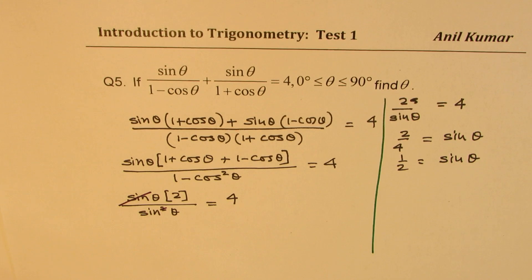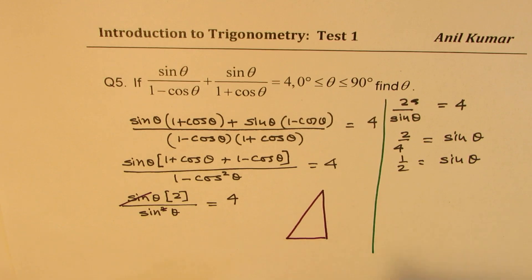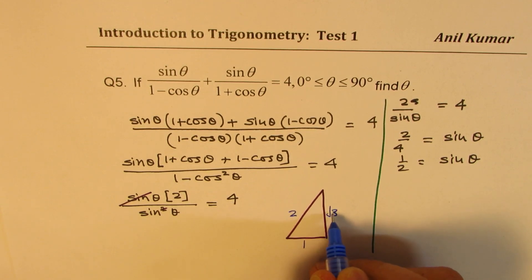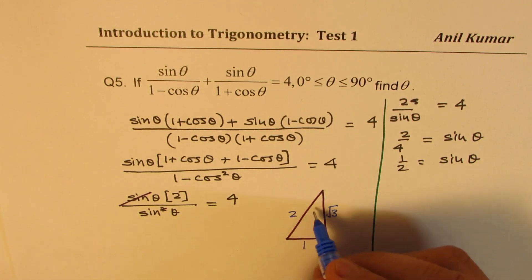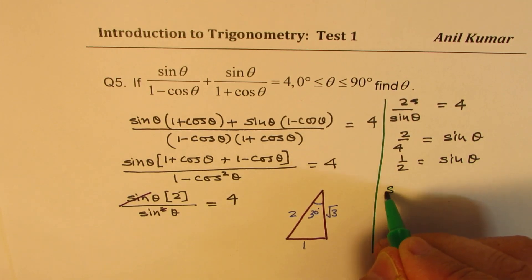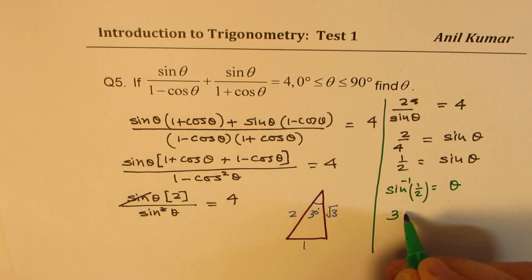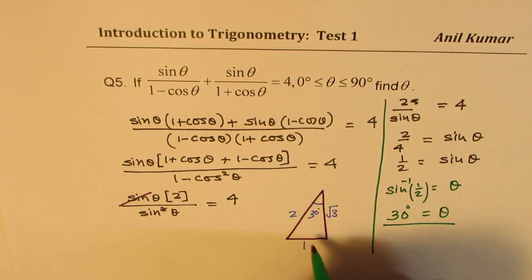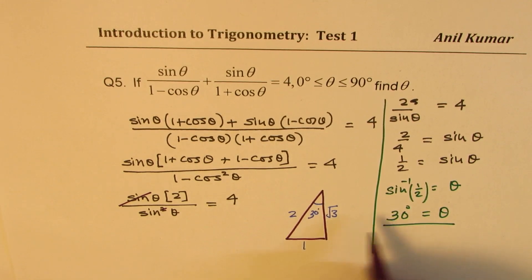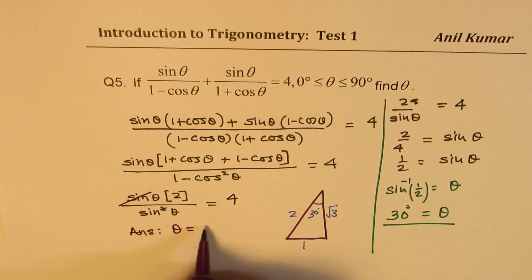So what is the angle theta when sine theta equals one half? Going back to our special triangle with sides 1, 2, square root 3 — sine of 30 degrees is 1 over 2. So theta equals sine inverse of one half, which is 30 degrees. Using special triangles, we always get the exact value. Our answer is theta equals 30 degrees.